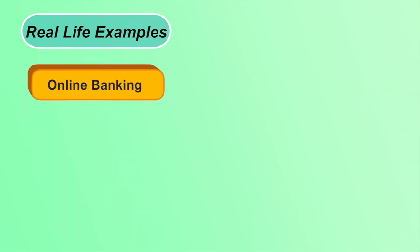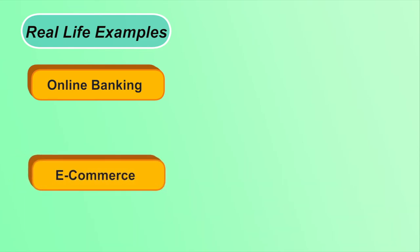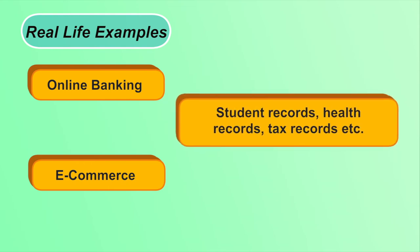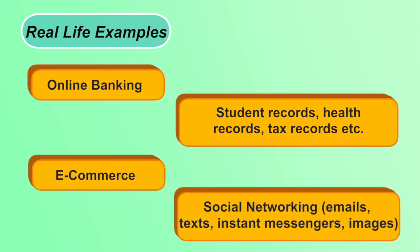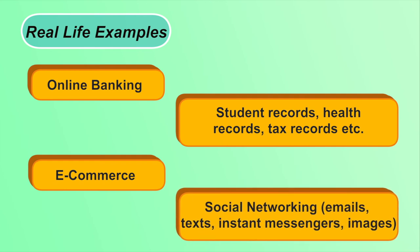Real-life examples of cryptography: in online banking, when you type your password it is first encrypted and then sent to the server for authentication. In e-commerce, debit card information is saved in encrypted form. Student, health, and tax records are all saved in encrypted form. In social networking like WhatsApp, messages are shared between sender and receiver in encrypted form so attackers cannot read them.